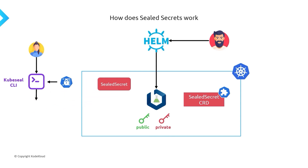At this point, the operator will detect a new sealed secret getting created. It's going to take the private key that it created and decrypt that secret, returning a regular secret on our Kubernetes cluster. You can do a kubectl get secrets and you'll see a regular secret. You can then pass it as an environment variable to your containers or mount it as a volume — it works just like any other secret. The benefit is that when you upload your manifest to GitHub, it's going to have the sealed secrets, not the regular secrets, and the only way to decrypt it is with the private key safely stored within your Kubernetes cluster.